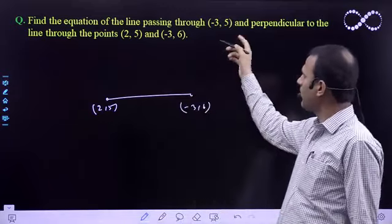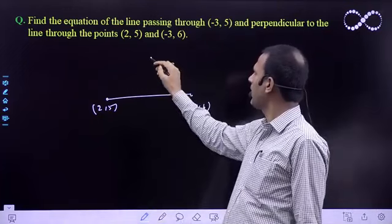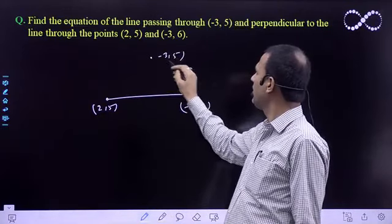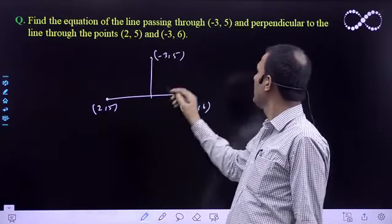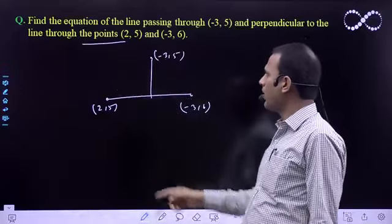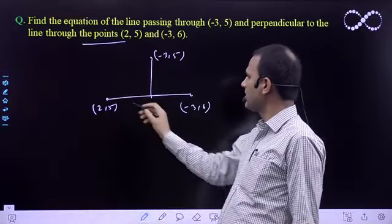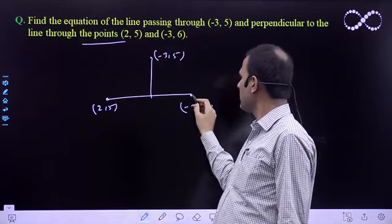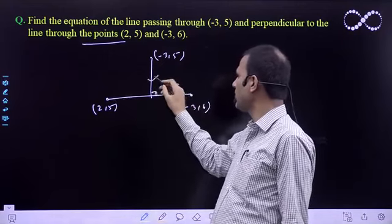Find the equation of the line passing through, suppose that you have a point (-3, 5). This point is passed, and perpendicular to the line through the points (2, 5) and (-3, 6). This point is perpendicular. You have to write this equation.